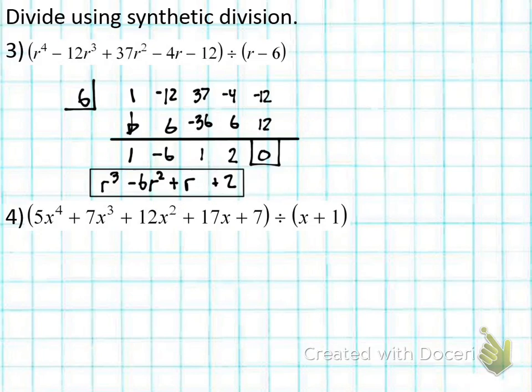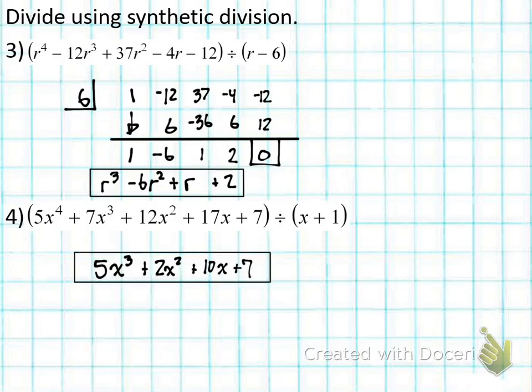Number 4 — go. On this one, your answer should have been 5x cubed plus 2x squared plus 10x. And that's it — that's your answer. That will conclude our lesson.